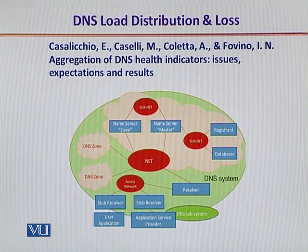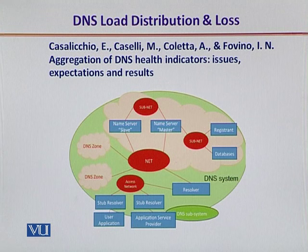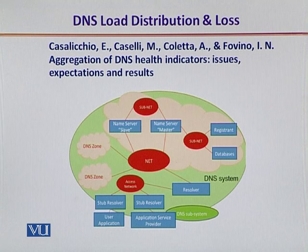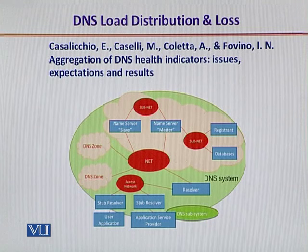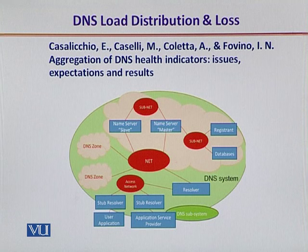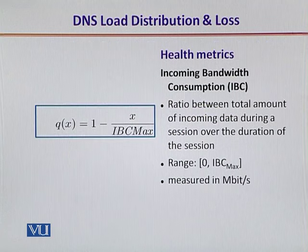In order to fully understand the load incurred on a DNS system, a very interesting paper by Casaliccio and friends titled 'The Aggregation of DNS Health Indicators: Issues, Expectations and Results' considers the figure before you as the reference architecture. This overall DNS system includes various networks, the registering entity, the database, the user application, the non-user application name resolver, and various DNS zones, each of which has its own naming server.